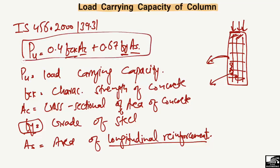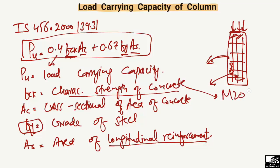In this equation, 0.4 is a constant value. The characteristic strength of concrete, FCK, can be M20, M25, or other grades. M20 means the strength of concrete is 20 MPa, and M25 means 25 MPa. We put the value of FCK into this equation.